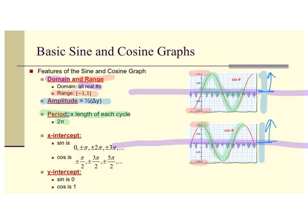Your x-intercepts are all your intercepts along the x-axis for sine and for cosine — we'll go over this in more detail when we graph it. Your y-intercept: notice that your sine is at zero, and your cosine is up here at one.